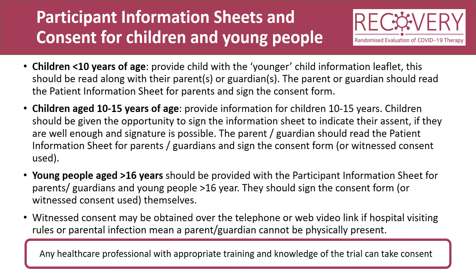When recruiting a child or young person to recovery, it's important to make sure you use the correct version of the participant information sheet. For those children who are less than 10 years of age, provide the child with the younger child information leaflet. They should read this along with their parent or guardian. The parent or guardian should be supplied with the patient information sheet for parents and they are the ones who will sign the consent form. If the child is aged between 10 and 15 years of age, please provide the information sheet for that age range. Children should be given the opportunity to sign the information sheet and this will indicate their assent, if they're well enough and the signature is possible. The parent or guardian should read the patient information sheet and sign the consent form. Witness consent may also be used.